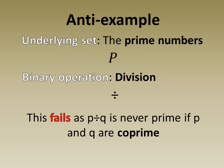As an anti-example we consider the set of prime numbers under division. This fails to be a magma as though division is a binary operation it is not closed on the underlying set.